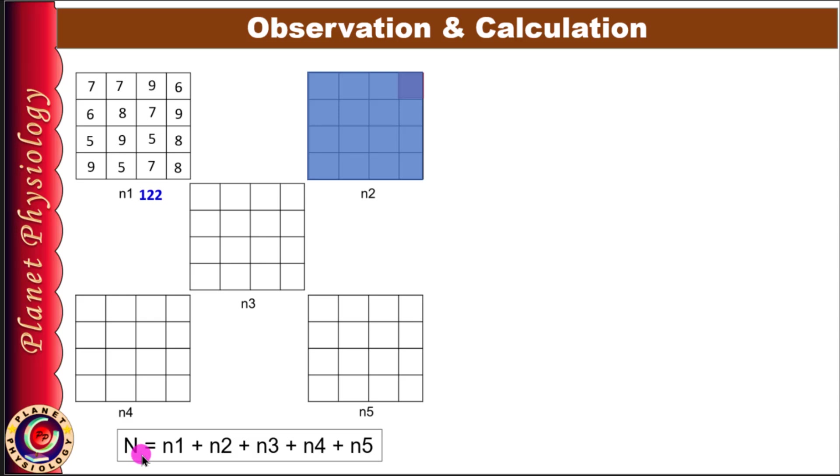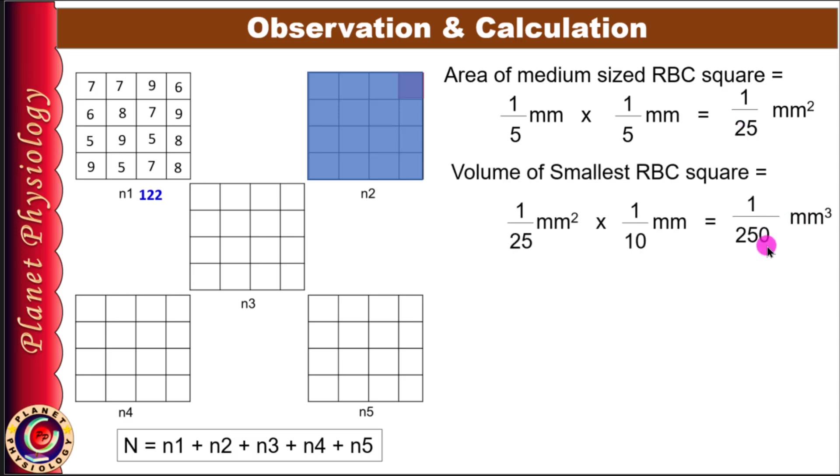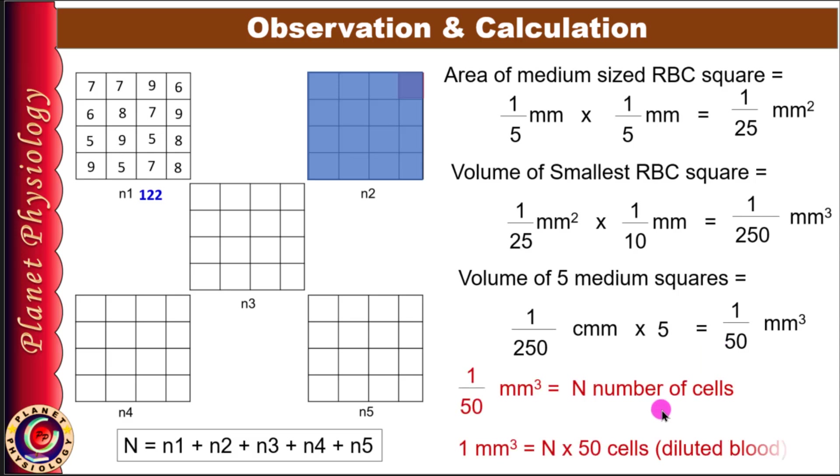Now you already know the dimensions of the squares. The dimension of 1 medium square is 1/5 length and 1/5 breadth, and hence its area is 1/25 mm². The volume is 1/250 cubic millimeter. Since we have counted cells in 5 medium squares, the volume becomes 1/250 × 5 = 1/50 cubic millimeter. It means you have counted N number of cells in 1/50 cubic millimeter volume. So to get the count in 1 cubic millimeter, multiply cell count by 50. Thus 50 is your volume factor. Alternatively, you can derive the volume factor by considering the volume of 80 small RBC squares. It will be the same.